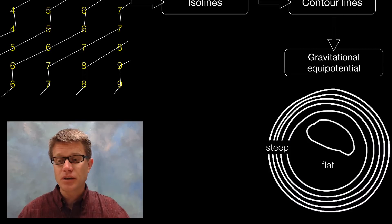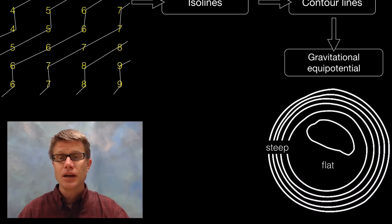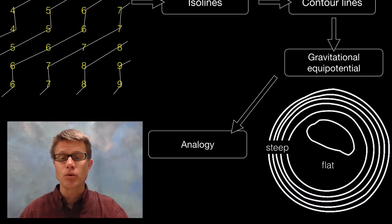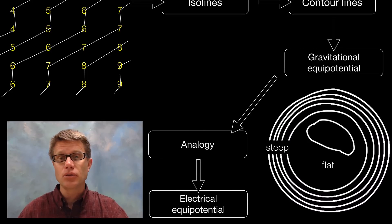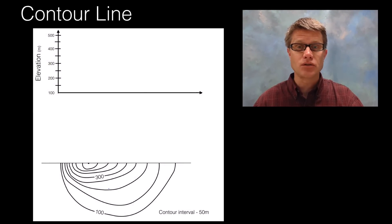Can you pick out something else about these contour lines? Another rule is that they'll never cross each other. You're never going to have an area that is two elevations at the same time, and so that's why the contour lines will never cross. And why are we learning about this earth science in physics? Remember, we're going to use it as an analogy for electrical equal potential lines, and we'll get to that more in the next video.